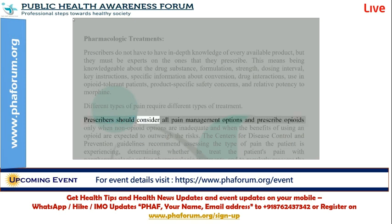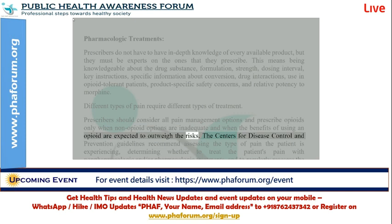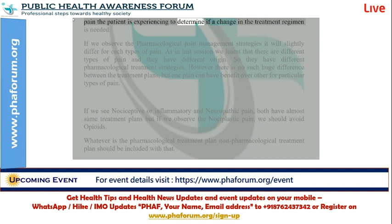Prescribers should consider all pain management options and prescribe opioids only when non-opioid options are inadequate and when the benefits of using an opioid are expected to outweigh the risks. The CDC guidelines recommend assessing the type of pain the patient is experiencing, determining whether to treat the patient's pain with non-pharmacologic and/or pharmacologic treatments, and regularly reassessing the pain to determine if a change in the treatment regimen is needed.